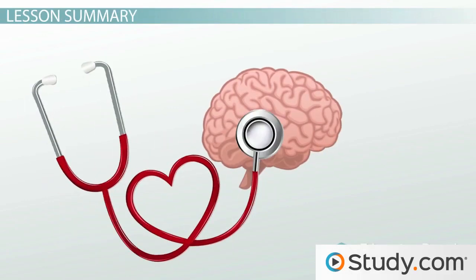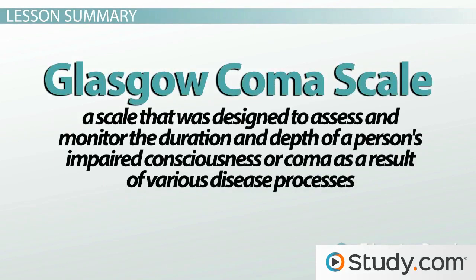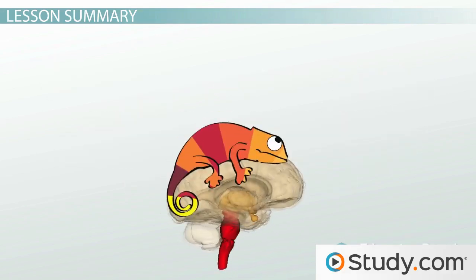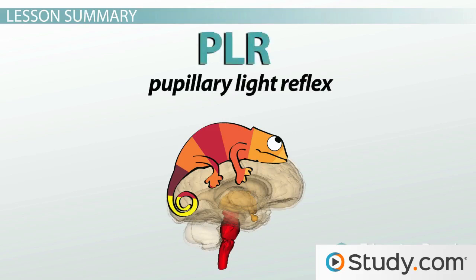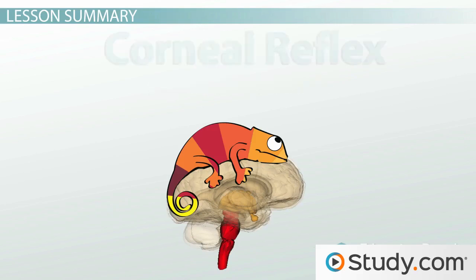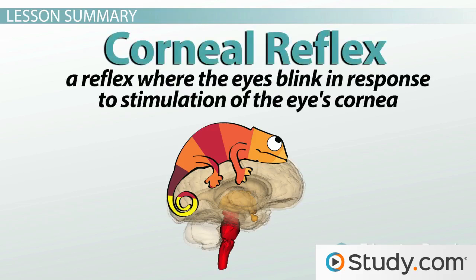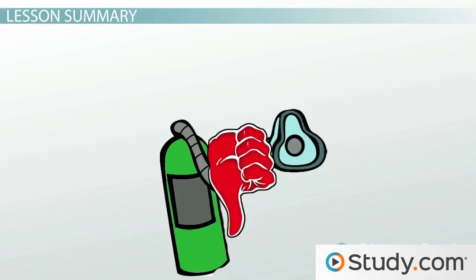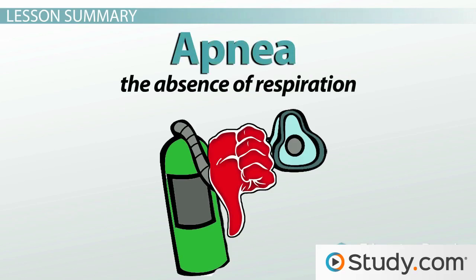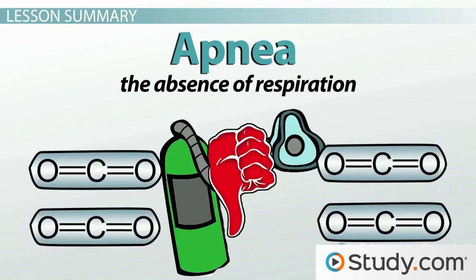So there you have it. These are the ways by which we can use neurological testing for many different reasons. We covered the Glasgow Coma Scale, designed to assess and monitor the duration and depth of a person's impaired consciousness or coma. We reviewed important brain stem reflexes such as the pupillary light reflex and the corneal reflex. Finally, we discussed the apnea test, where a person with brain death will inappropriately undergo apnea when their ventilator is disconnected and carbon dioxide is allowed to build up in the body.